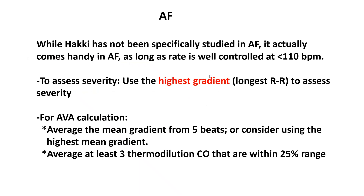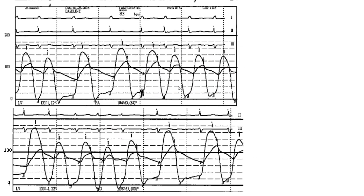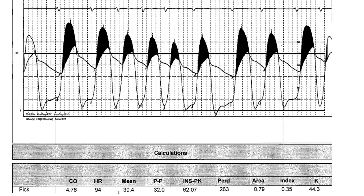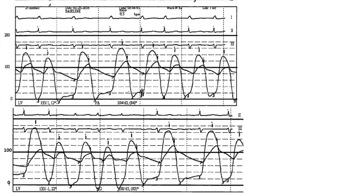Let's take a case: atrial fibrillation with a heart rate less than 100–110 bpm. How do you calculate the pressure gradient and valve area? The computer averaged gradients across nine beats — as guidelines recommend averaging five to ten beats — and came out with 30 mmHg. Do you think this is severe AS?